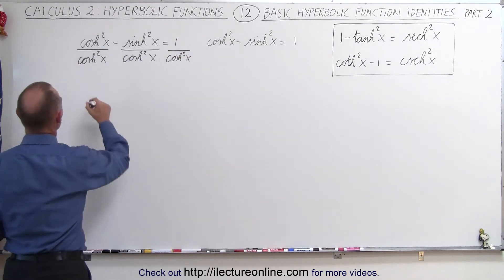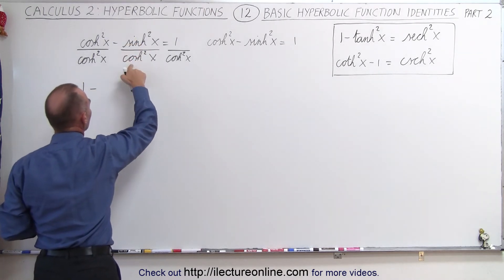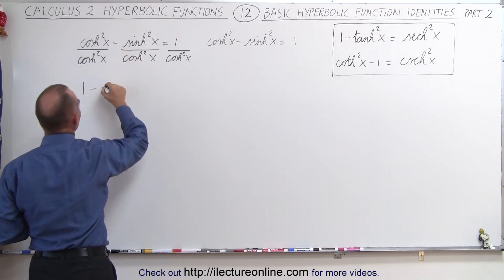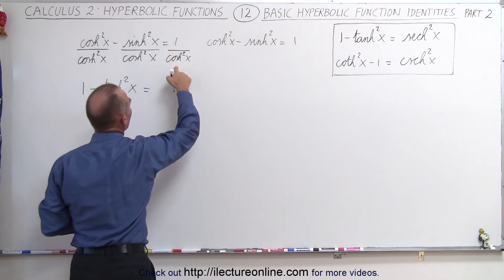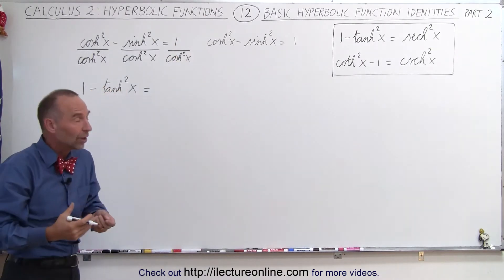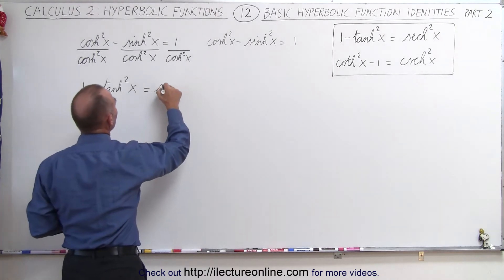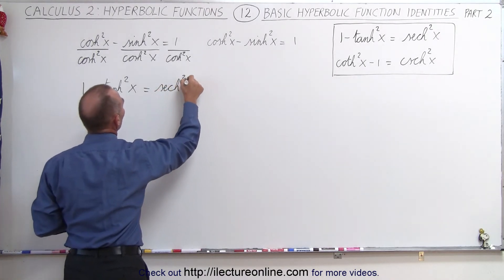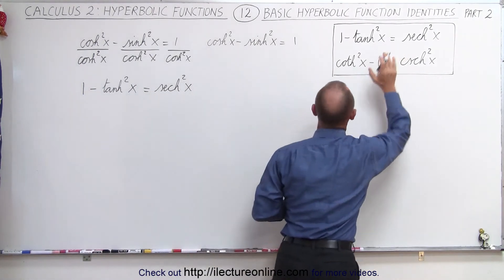This becomes equal to 1 minus the hyperbolic sine divided by the hyperbolic cosine is the hyperbolic tangent. So this becomes the hyperbolic tangent squared of x equals, and 1 over the hyperbolic cosine, the inverse of the cosine, that would be the secant. So this becomes the hyperbolic secant squared of x. Now let's see what we have over here. That's indeed our first identity.